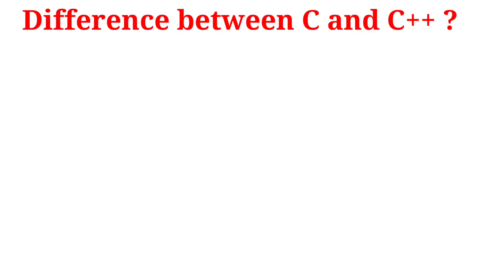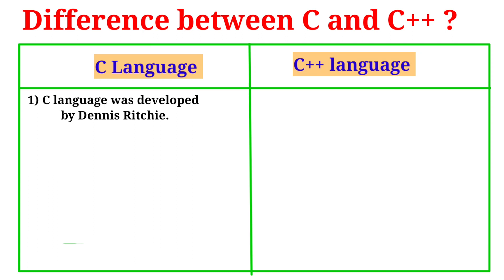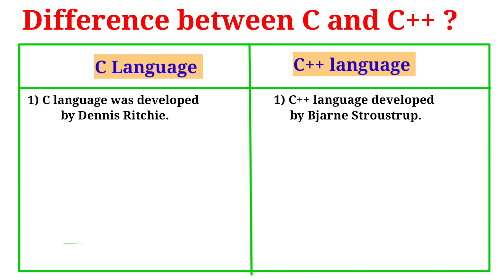Today's topic is the difference between C and C++. C language was developed by Dennis Ritchie, and C++ language was developed by Bjarne Stroustrup.